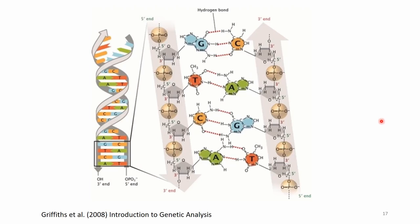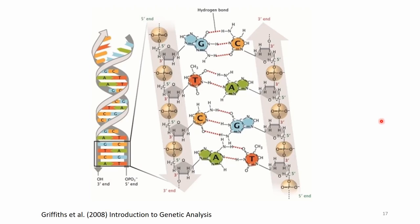Here is another visualization of the DNA — the phosphate and deoxyribose alternating backbone, with one strand on one side and the other strand on the other, and in the middle the purine and pyrimidine bases held together by hydrogen bonds. I'd like to highlight the three-prime, five-prime story.